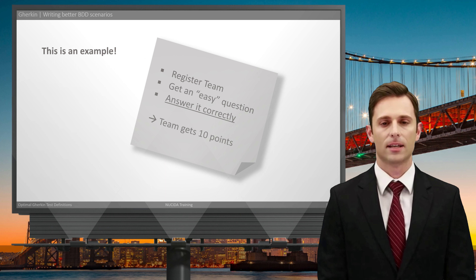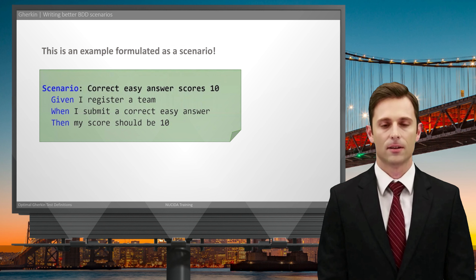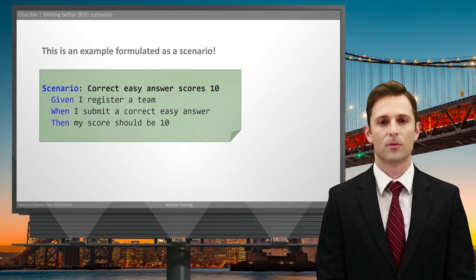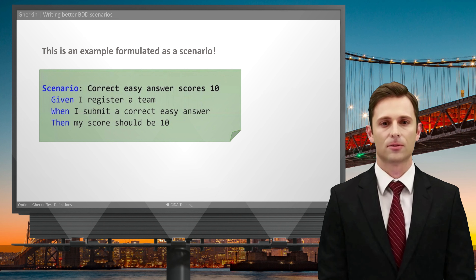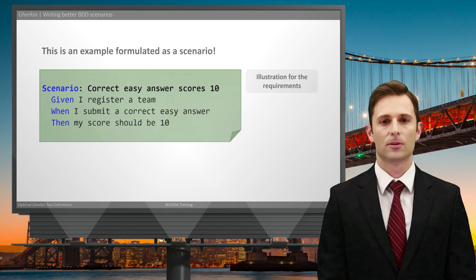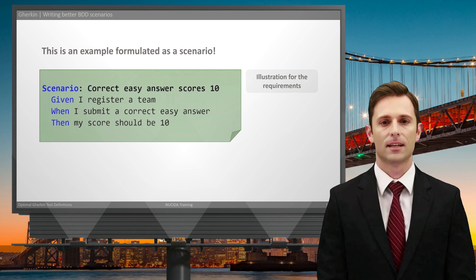Once we have made the discovery and have the examples, the next step is formulation — when we take these examples and document them as BDD scenarios, writing them down and checking them into source code. They become a sort of living documentation because they will be there for the lifetime of your project and you can always run them — they turn either red or green, indicating whether the application is fulfilling what we are documenting. These are the formulation and automation activities, and today we will focus on the formulation parts.